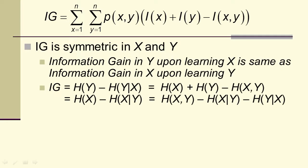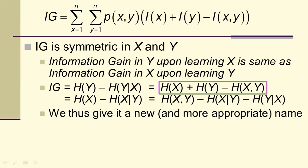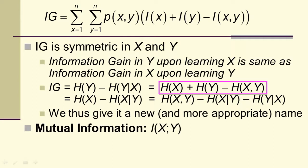The information gain in y upon learning x is the same as the information gain in x upon learning y. We can write that in a number of different ways using definitions of conditional entropy. The information gain will be the sum of the entropies of x and y respectively minus the joint entropy H(x, y). And because it's symmetric, we're going to give it a new and more appropriate name: we call it mutual information, written I(X; Y).